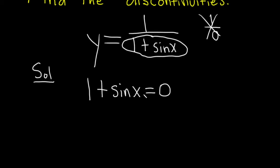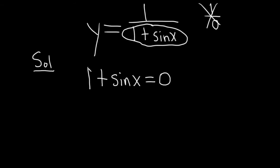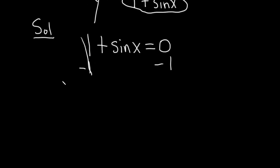To solve this equation, the first step is really easy. All you have to do is subtract 1 from both sides. So minus 1 minus 1 and they cancel. So we end up with sine x equals negative 1.